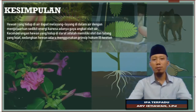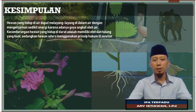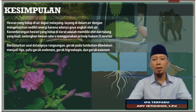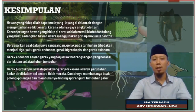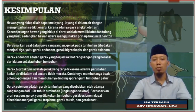Baik anak-anak sekalian, yang terakhir ada kesimpulan. Bahwa hewan yang hidup di air dapat melayang-layang di dalam air dengan mengeluarkan sedikit energi karena adanya gaya angkat oleh air. Kecenderungan hewan yang hidup di darat adalah memiliki otot dan tulang yang kuat, sedangkan hewan udara menggunakan prinsip hukum Newton 3. Berdasarkan arah datang rangsangannya, gerak pada tumbuhan dibedakan menjadi tiga: gerak endonom, gerak higroskopis, dan juga gerak esionom. Gerak endonom adalah gerak yang terjadi akibat rangsangan yang berasal dari dalam sel atau tubuh tumbuhan. Gerak higroskopis adalah gerak yang terjadi karena adanya perubahan kadar air di dalam sel secara tidak merata. Gerak esionom merupakan gerak tumbuhan yang disebabkan oleh adanya rangsangan dari luar tubuh tumbuhan.